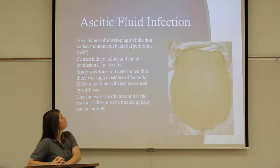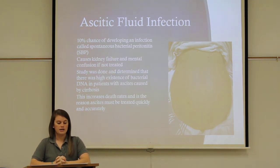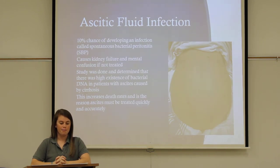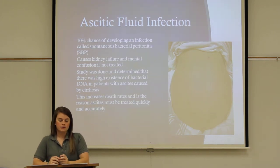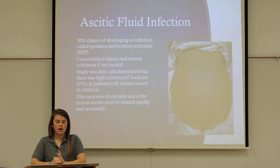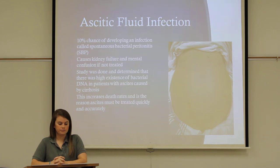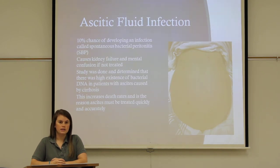Ascitic fluid infection can occur in patients with ascites. They have a 10% chance of developing an infection called spontaneous bacterial peritonitis, or SBP. This causes kidney failure and mental confusion if not treated. A study determined that there was a high existence of bacterial DNA in patients with ascites caused by cirrhosis. This infection increases death rates and is the reason that ascites must be treated quickly and accurately.